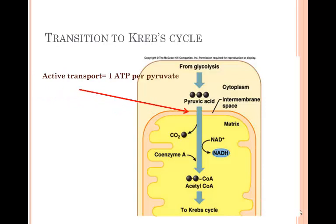Once inside, the pyruvate molecules undergo a transition or preparatory reaction in which an NADH molecule is produced once again, as well as a carbon dioxide. After this reaction, the product feeds into the citric acid cycle, formerly known as the Krebs cycle.